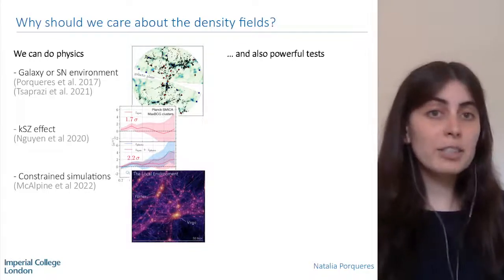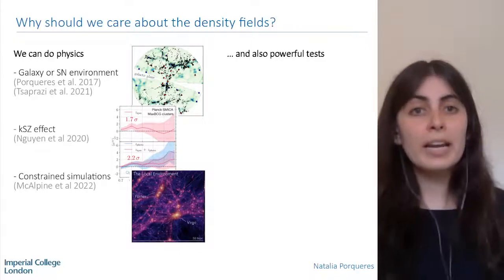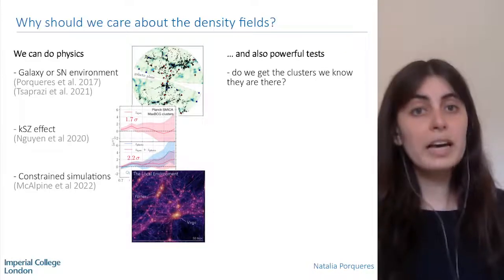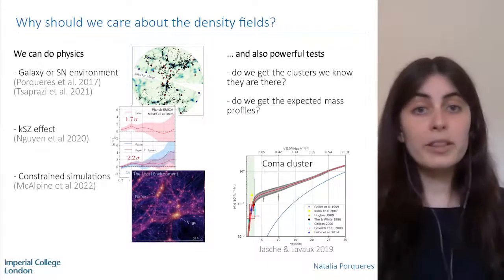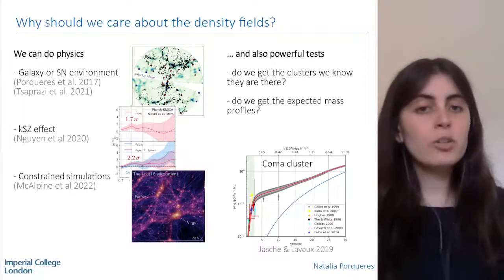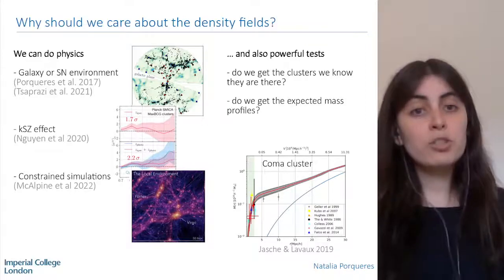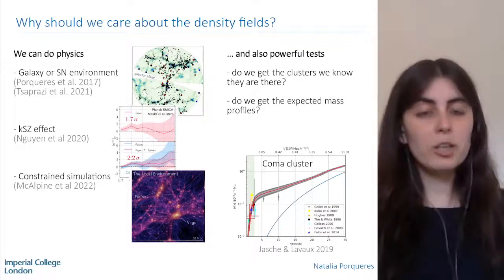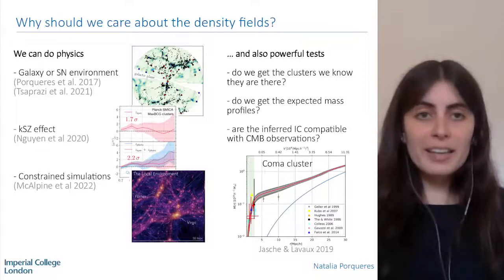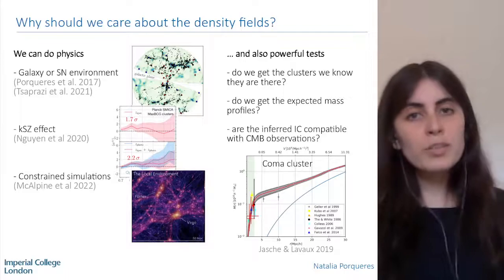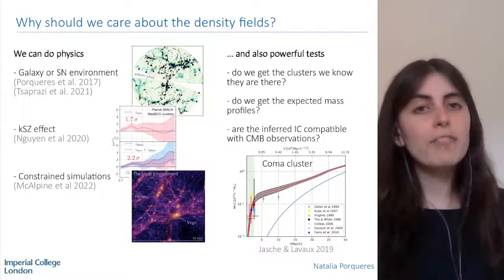These maps are also a powerful validation tool. We can ask whether we recover known clusters and whether their mass profiles agree with independent observations. Jens and Guillem measured the mass profile of the Coma cluster with Borg and found it consistent with completely independent measurements. So in summary, we get more precise constraints on cosmological parameters, we can do physics with these maps, and we have a way to validate our results.